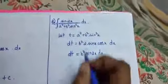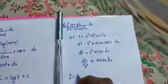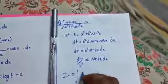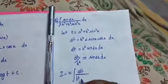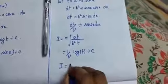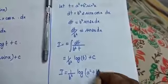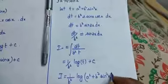Sin 2x into dx is our numerator, so dt divided by b squared is equal to sin 2x into dx. Now I is equal to integral of our numerator dt divided by b squared, and the denominator is t. So that gives 1 by b squared into log t plus c. Therefore I is equal to 1 by b squared into log of a squared plus b squared sin squared x, plus c.